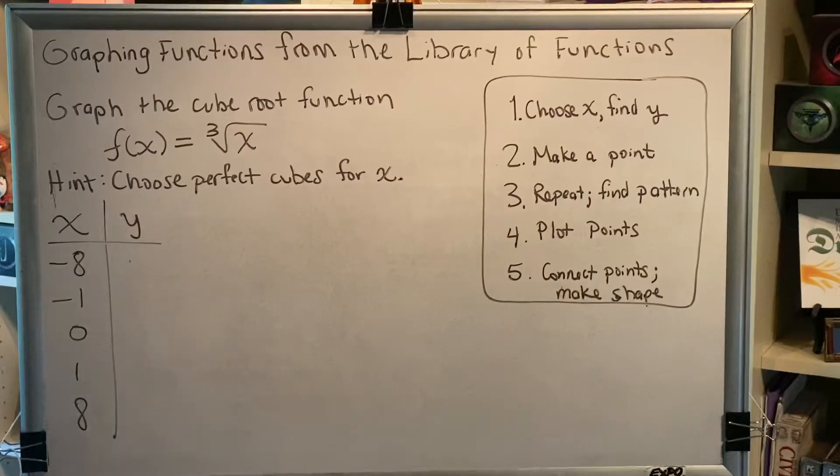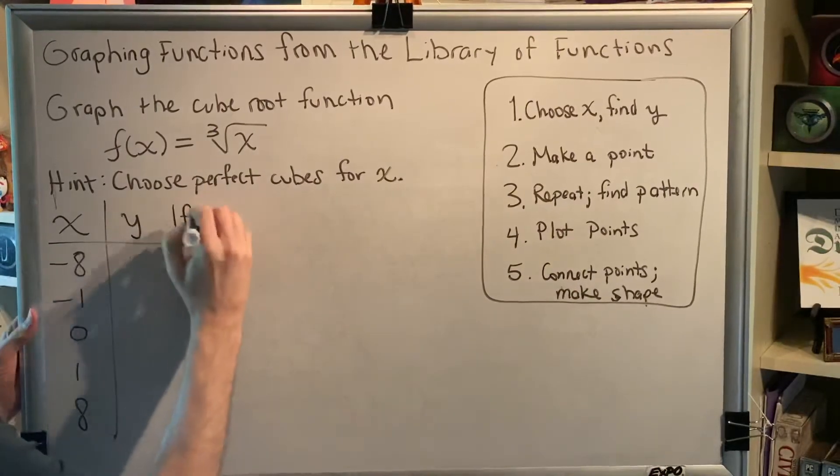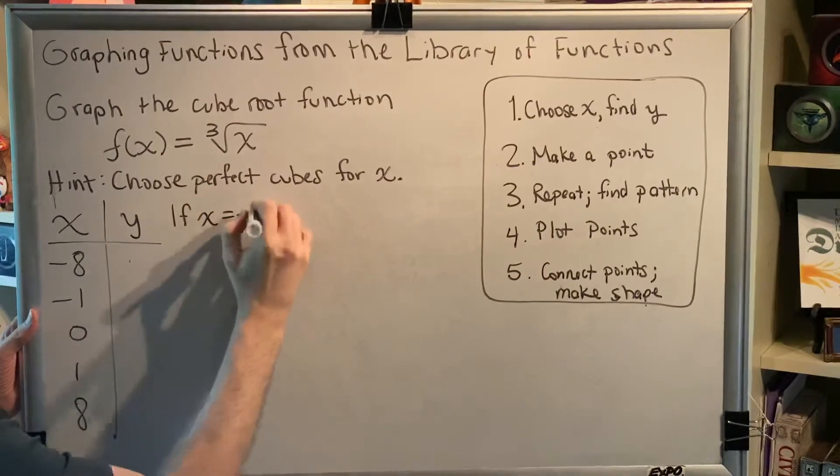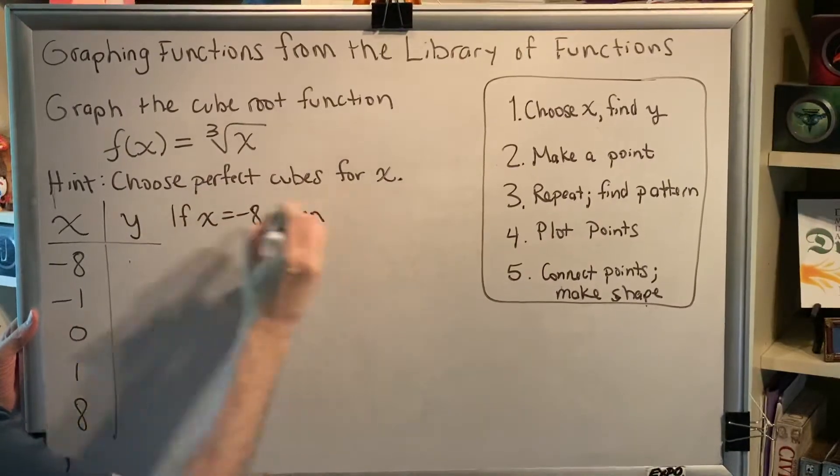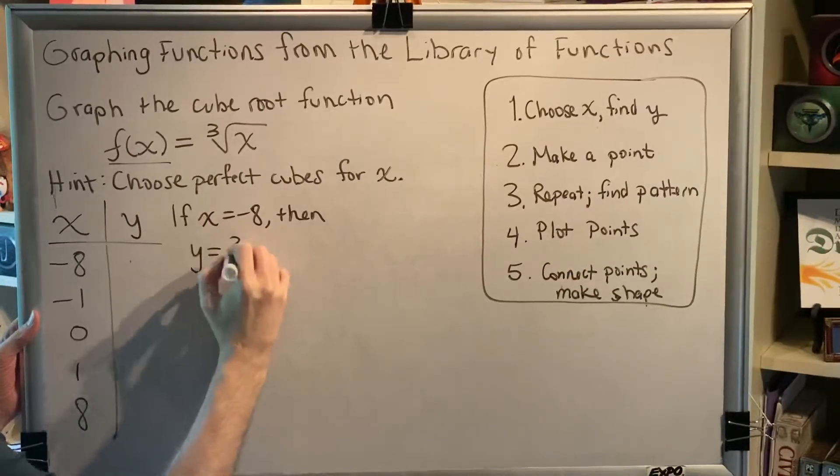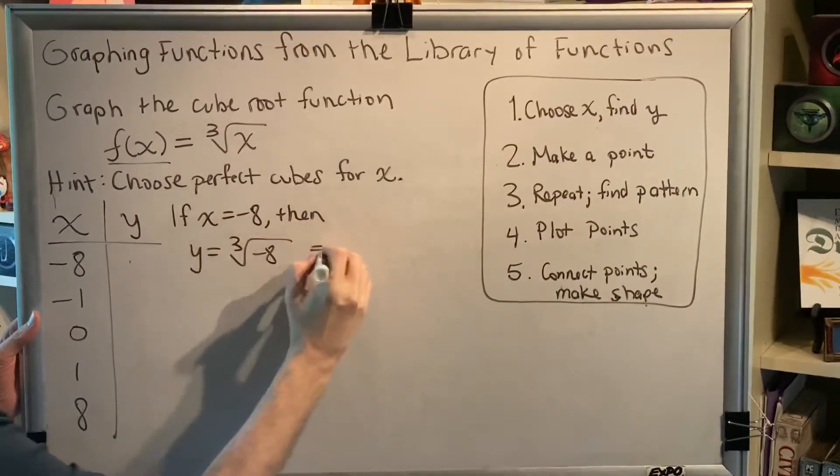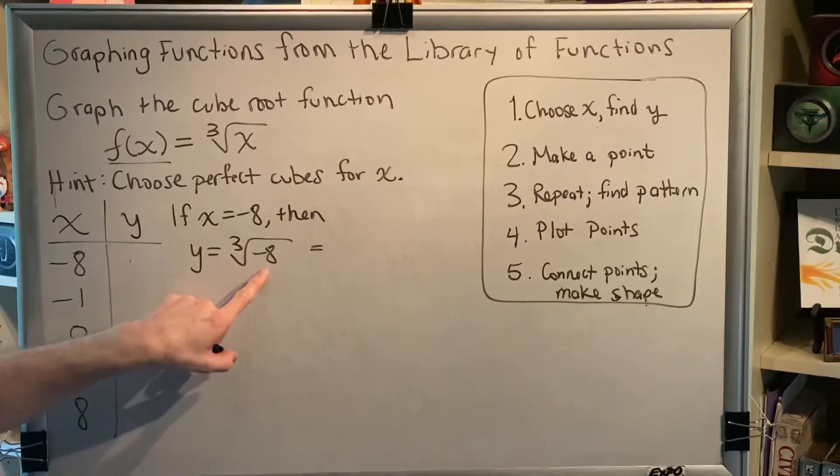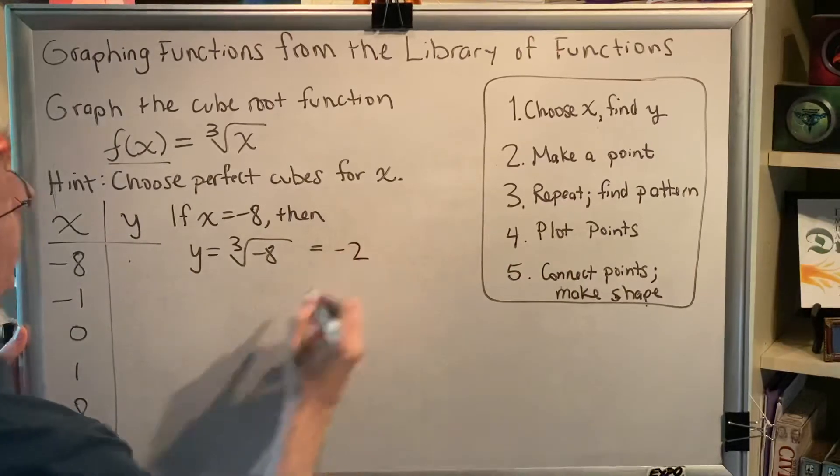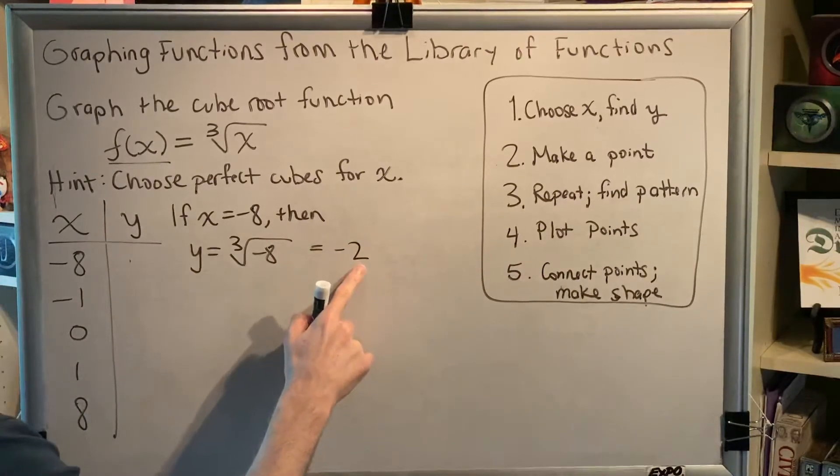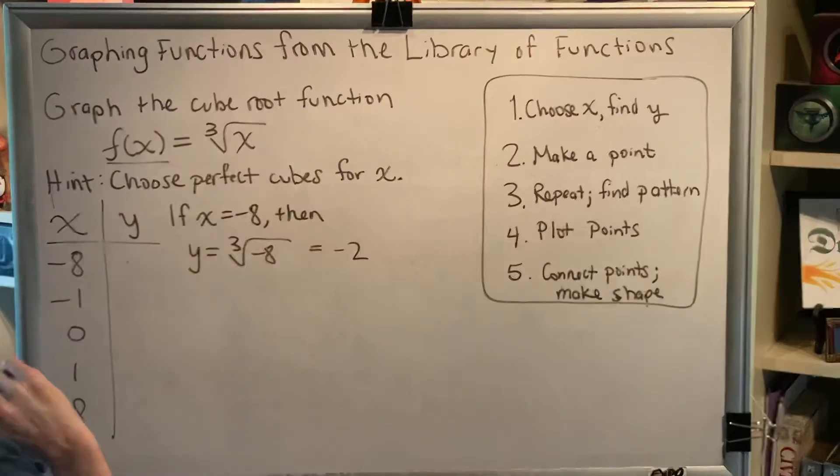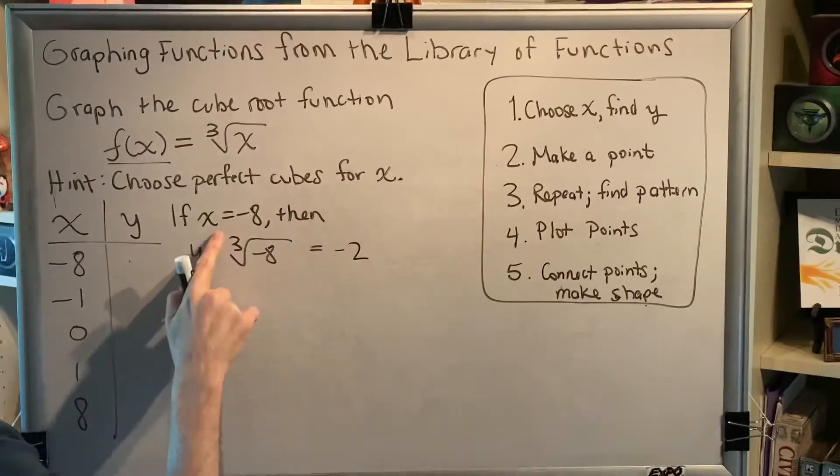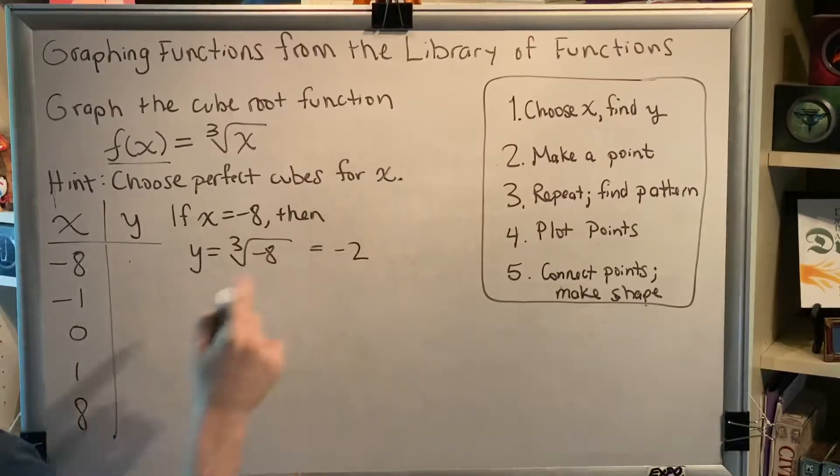So now we just have to plug in to find y. For example, if x equals negative 8, then f of x, which is y, is equal to the cube root of negative 8. Well, a cube root is asking yourself, what number do you have to multiply by itself three times to make negative 8? And the answer is negative 2. Negative 2 cubed equals negative 8. Therefore, the cube root of negative 8 is negative 2. So we can put that value in our table.